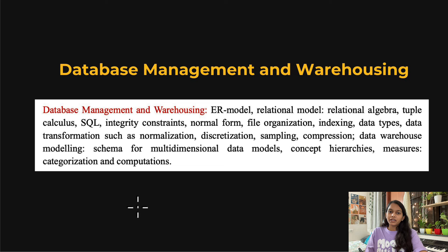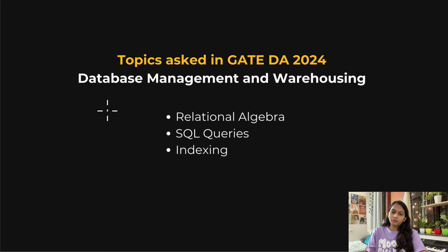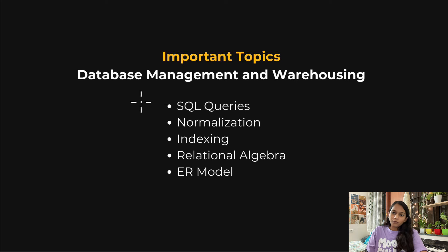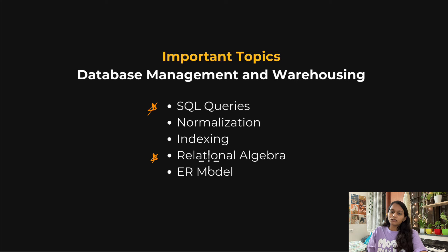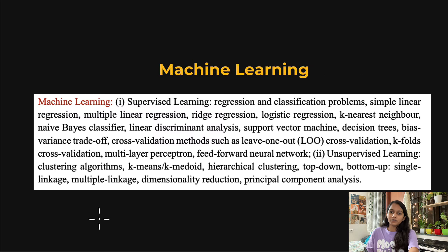For DBMS — database management and warehousing — the official syllabus covers several topics. In GATE DA 2024, questions were asked from relational algebra, SQL queries, and indexing. There were no questions from data warehousing last year. The important topics from DBMS are: SQL queries, normalization, indexing, relational algebra, and ER model. SQL queries is easy, relational algebra is easy to moderate, and ER model is also easy to moderate. If you are a GATE CSE aspirant, these are all overlapping topics from GATE CSE.